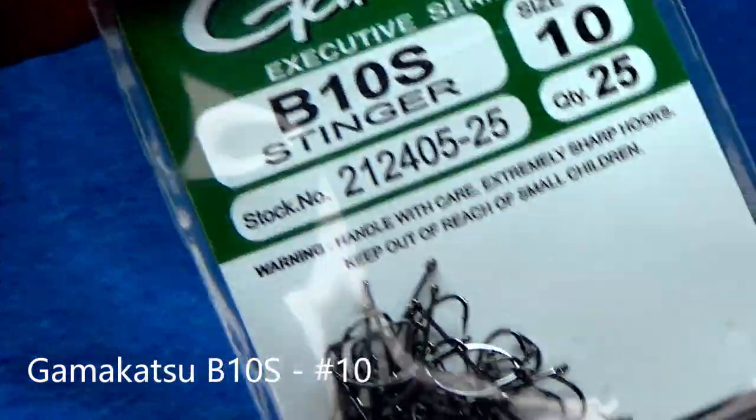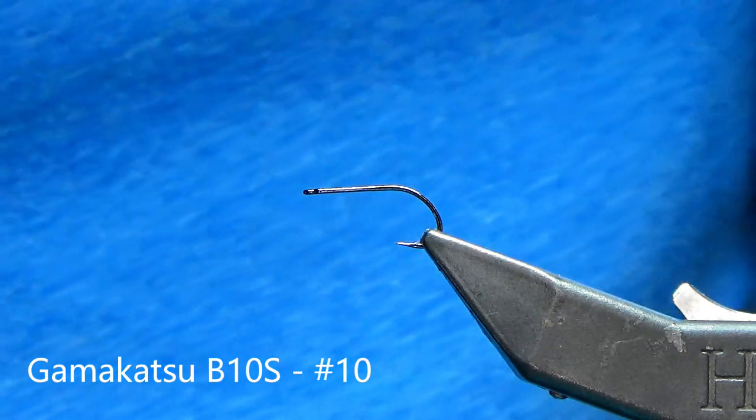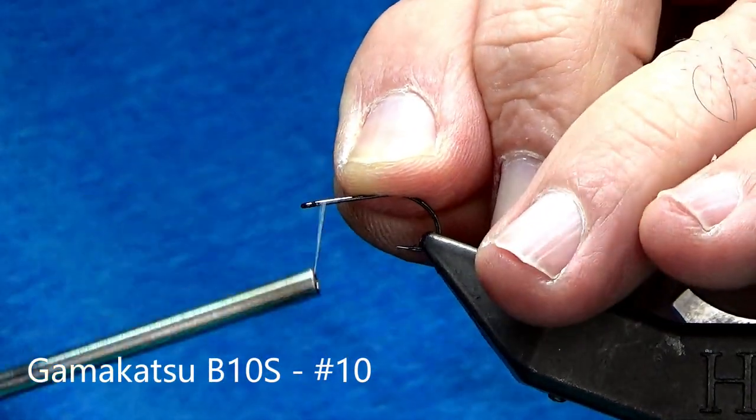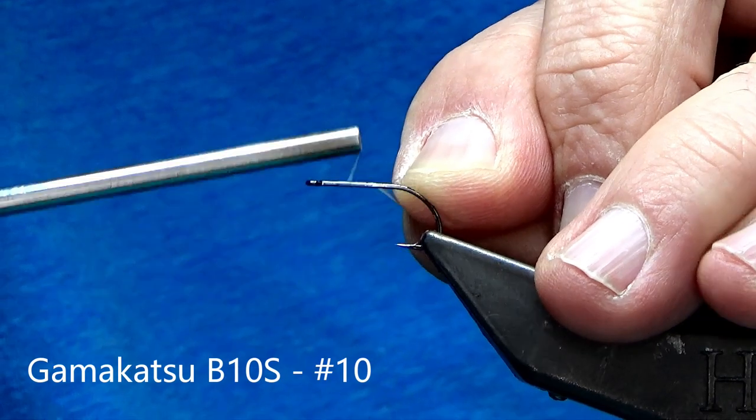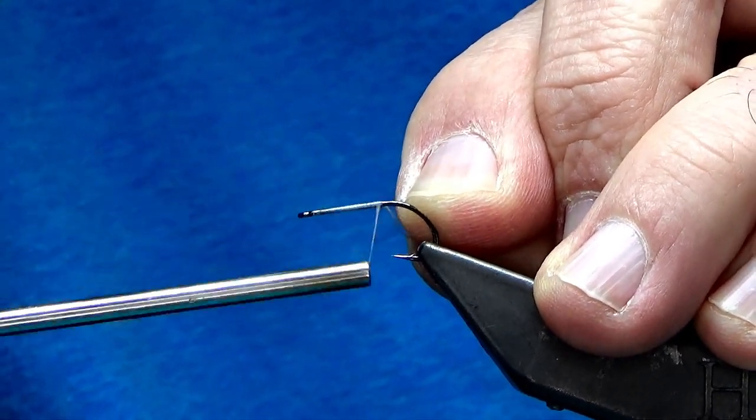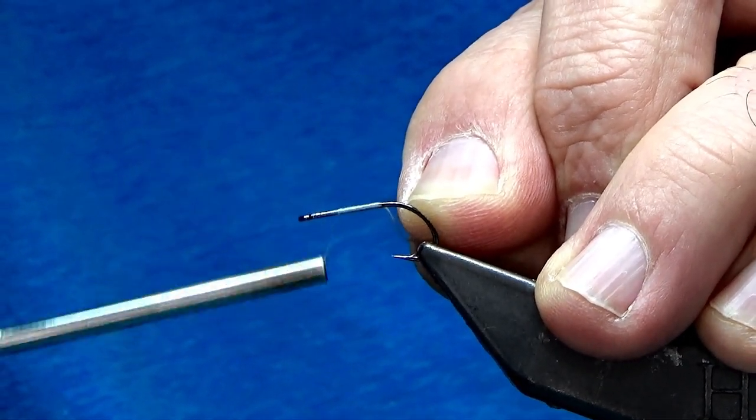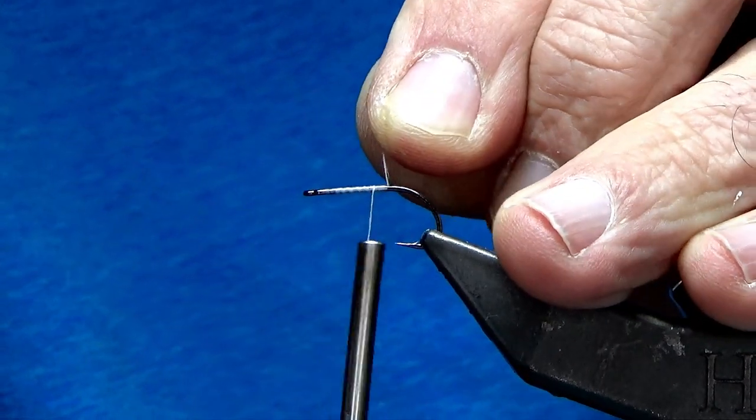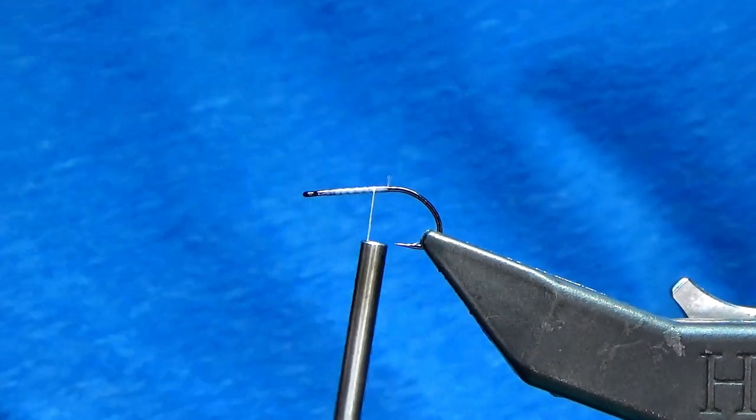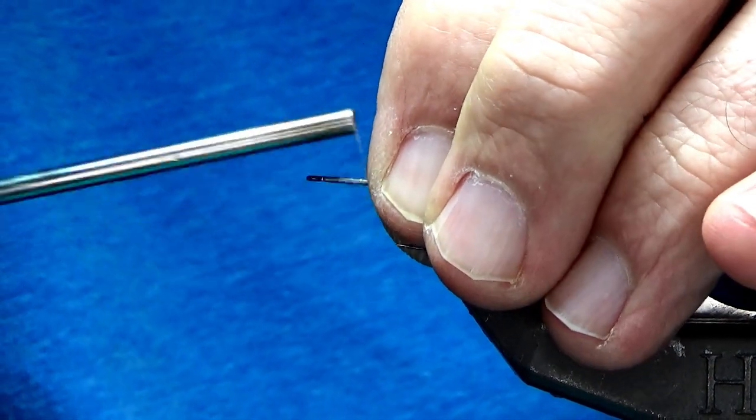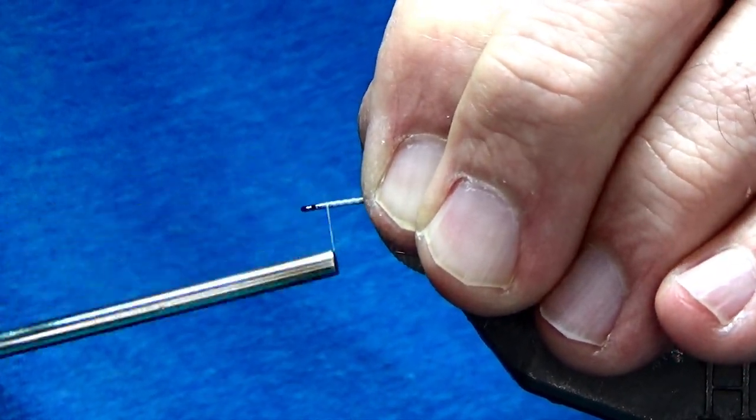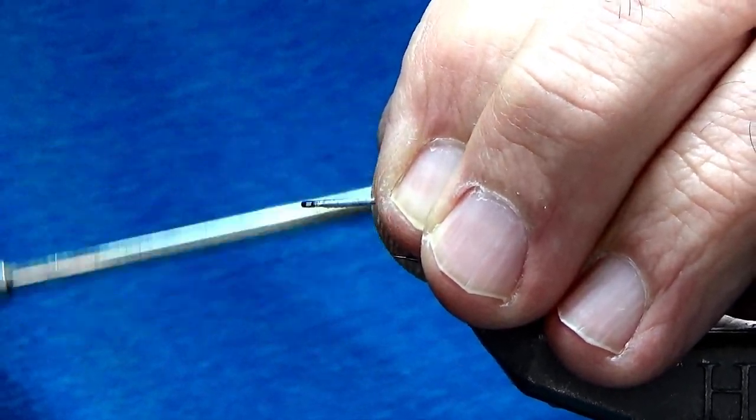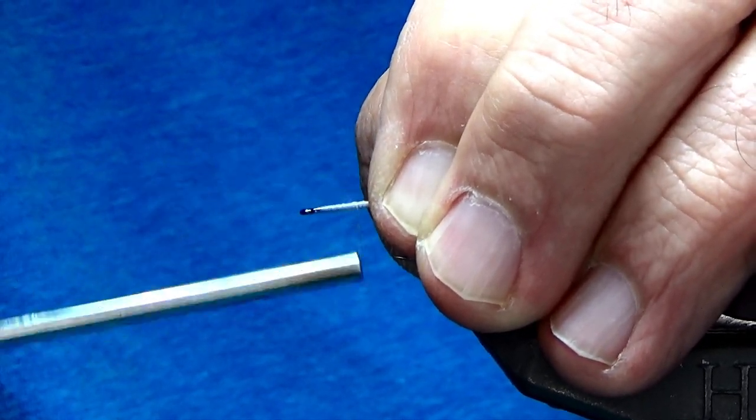Okay. So for the front hook, we're going to use a B10S Gamagatsu. Size is number 10. And because we're going to be putting an eye on, we want to make sure that we get that eye nice and secure. The best way that I figured out how to do it over the years is by following Bob Clauser's suggestion. And so I recommend that you watch him.